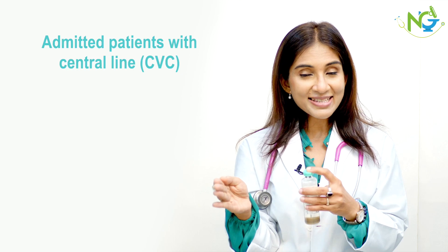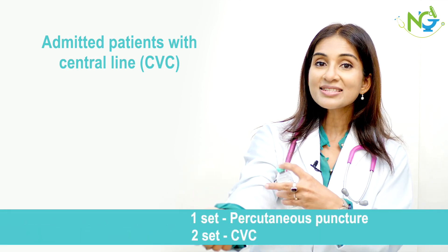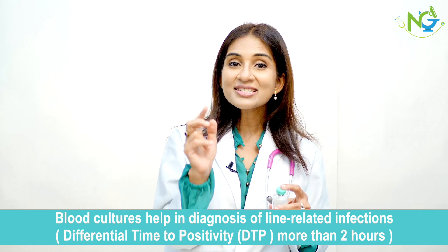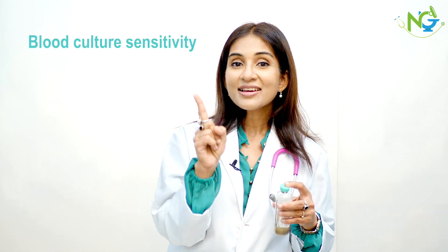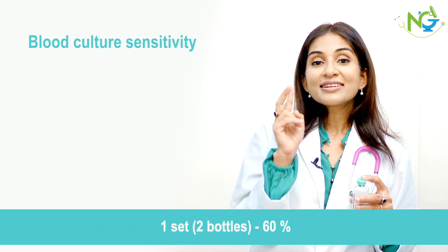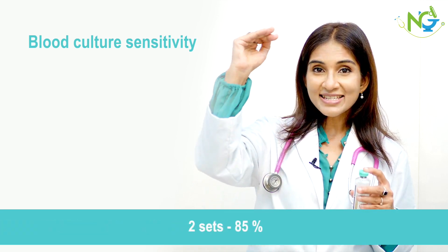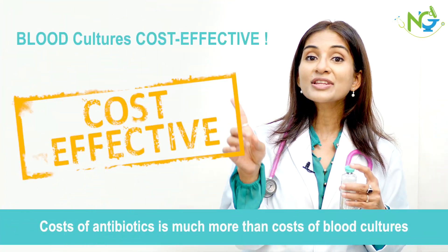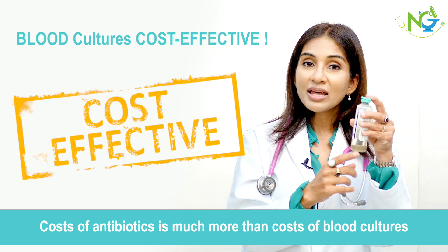For hospitalized patients, one set is 2 bottles from one percutaneous puncture, and the second set should be from the central line — this is important for diagnosing line-related infections. If only one bottle is sent, the chance of isolating bacteria is just 10–15%. With 1 set, chances increase to 60%. With 2 sets, it's 85%, and with 3 sets, it is 90%. So volume matters. Getting a diagnosis is not very expensive, because the cost of antibiotics in hospital is much more than the cost of blood cultures.